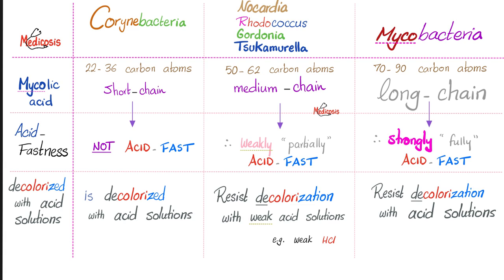What does acid-fast mean? "Fast" means resistant — as in "fasten your seatbelt." So instead of saying acid-fast, imagine acid-resistant, which means these organisms will resist the decolorization with acid solutions.